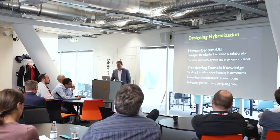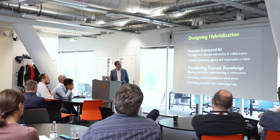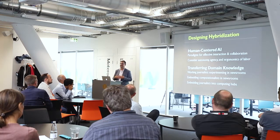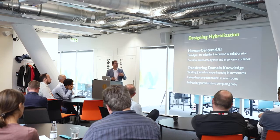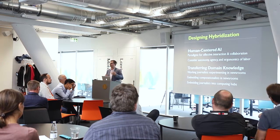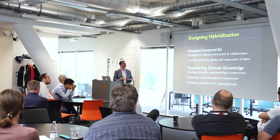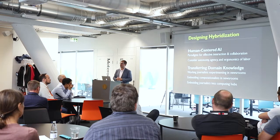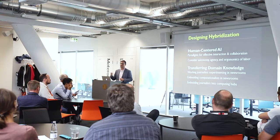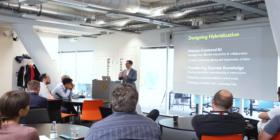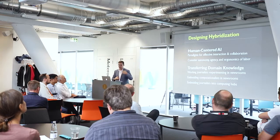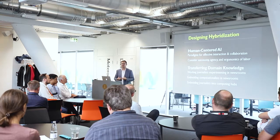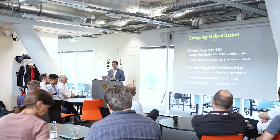The next idea I want to touch on is how do we design hybridization. If we're really taking this idea of human-centered AI seriously, we want to design these workflows to bring people and AI together in ways that are both effective and efficient, but also considerate of the ergonomics of the human situation. Do we want journalists to simply be reacting to an assignment from an algorithmic editor — much like an Uber driver reacts to an algorithm telling them where to drive — or can we think more deliberately about ensuring autonomy, agency, and good labor ergonomics as humans interface daily with these AI systems?